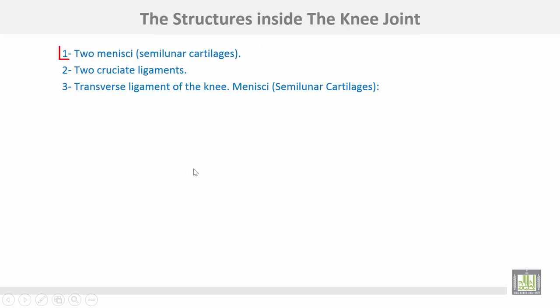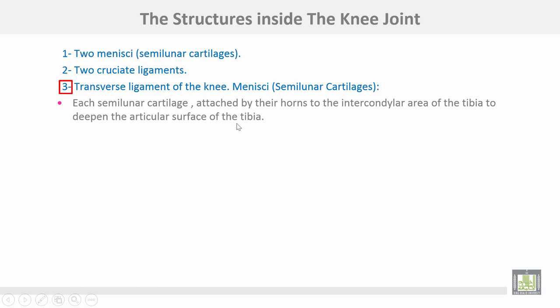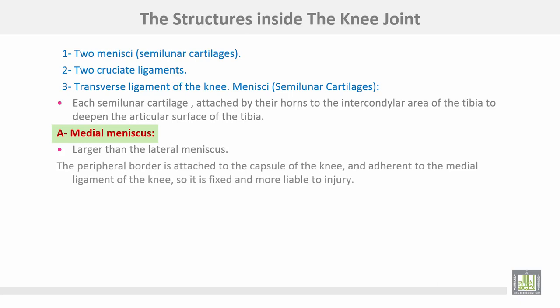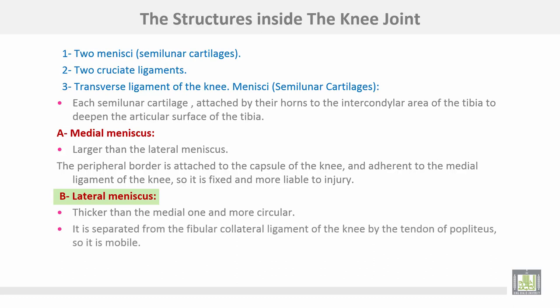The structures inside the knee are two menisci or semilunar cartilages, two cruciate ligaments, and the transverse ligament of the knee. Each semilunar cartilage is attached by their horns to the intercondylar area of the tibia to deepen the articular surfaces of the tibia. The medial meniscus is larger than the lateral one. Its peripheral border is attached to the capsule of the knee and is adherent to the medial ligament of the knee, so it is fixed and more liable to injury. The lateral meniscus is thicker than the medial one and more circular.